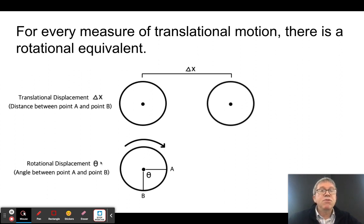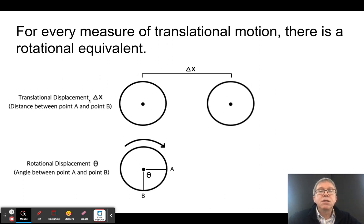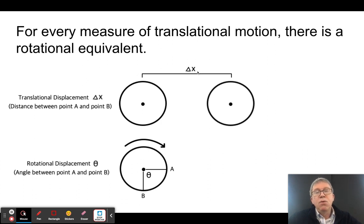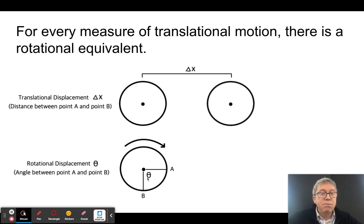For every type of translational motion there is, there is a rotational equivalent. The first measurement we took was displacement, delta x — how far an object ended up from its starting position. We're going to have the same thing with rotational displacement. We're going to call it angle theta, which is the final minus initial angle. That is our rotational displacement, just like delta x is our translational displacement.